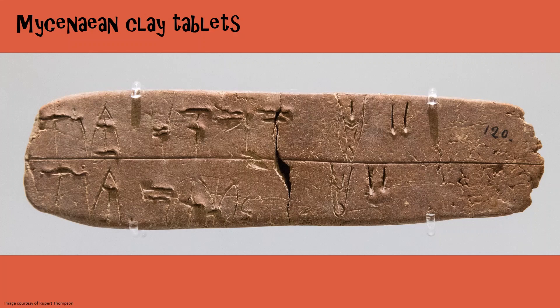Here is a typical Linear B document. It's made of clay. The clay would have been shaped when it was wet, and then an inscription would have been drawn on the flat side of it. Then it would have been left to dry.